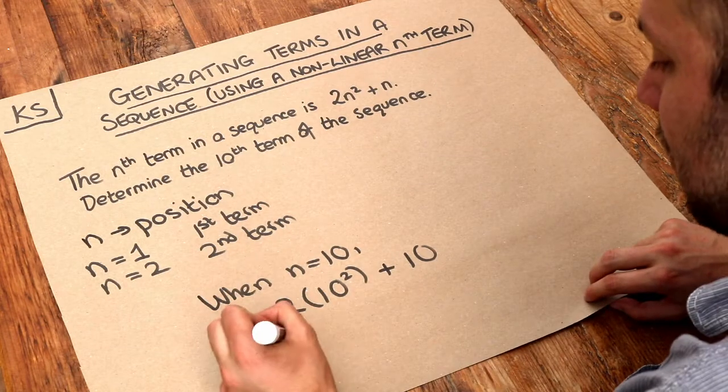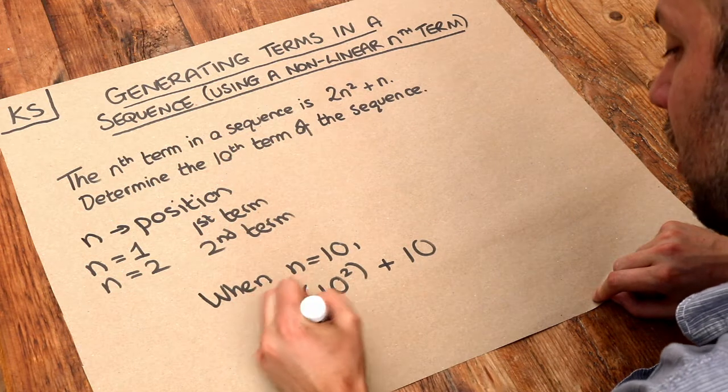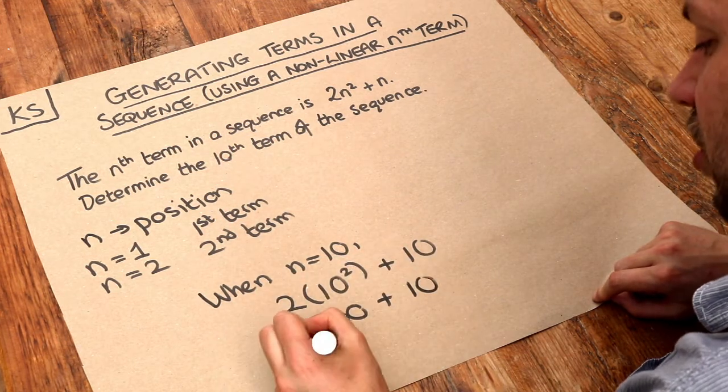So we've got to square the 10 first and then times it by 2. 10 squared is 100 times 2 is 200. And if we add the 10 we get 210.